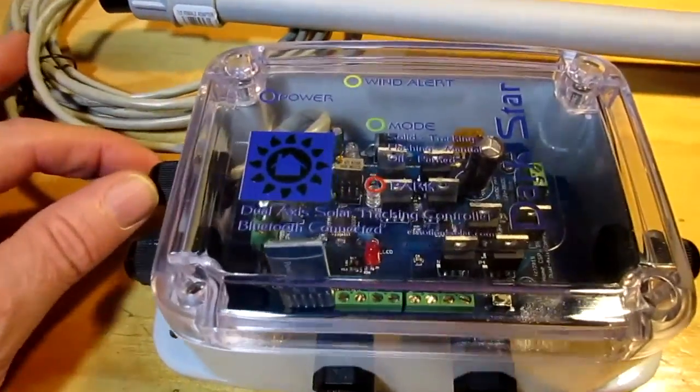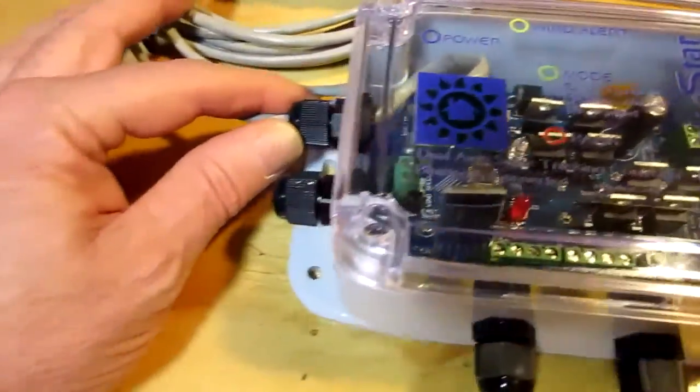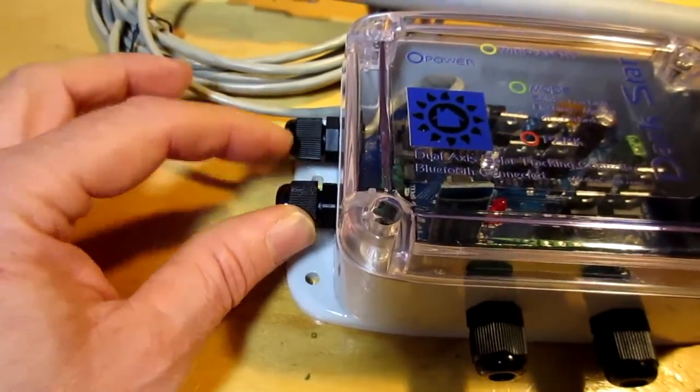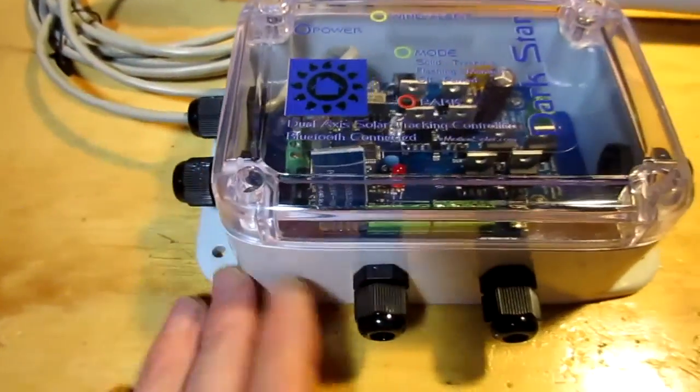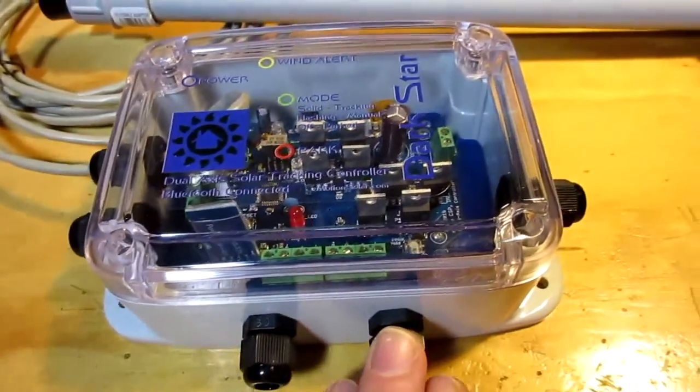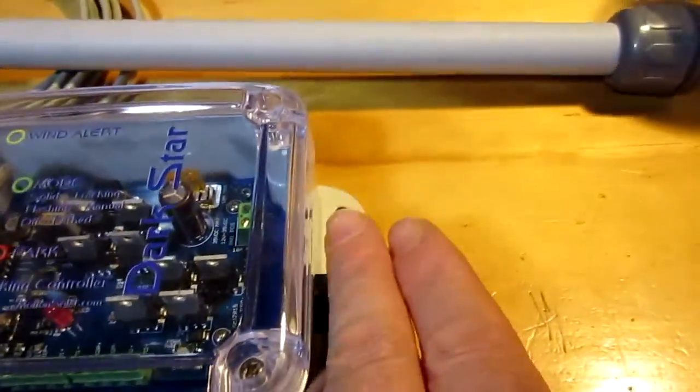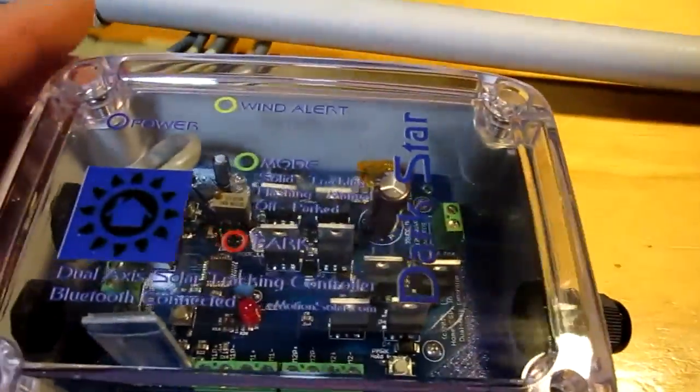Comes in here. Got extra grommets input for the anemometer. There's a motor 1, motor 2 outputs and power input over here.